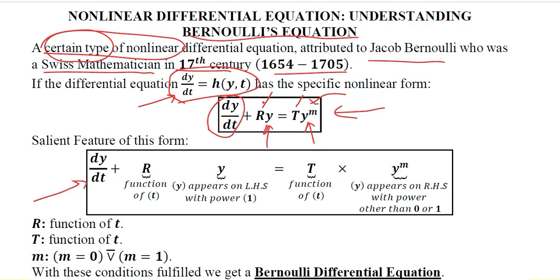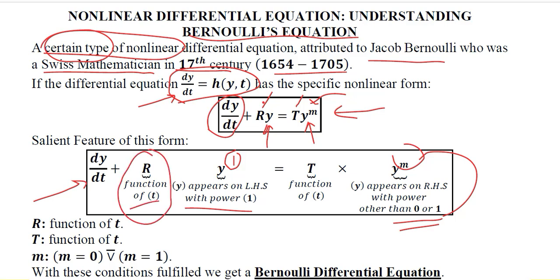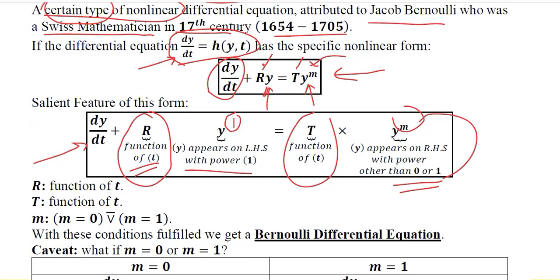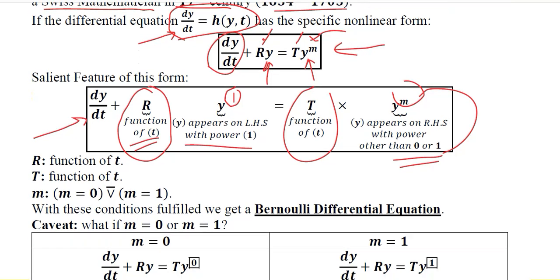The first term has y with power 1 — this is to be noted. Whereas the power of y in the second term is m, and the value of m is neither 0 nor 1; this is a condition that cannot be violated. The coefficient r is a function in terms of time, and capital T is also a function of time, as we will see in numerical examples.